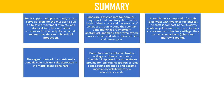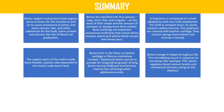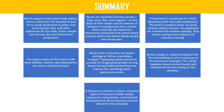Bones form in the fetus on hyaline cartilage or fibrous membrane models. Epiphyseal plates persist to provide for longitudinal growth of long bones during childhood and become inactive by calcifying when adolescence ends. Bone remodeling occurs in response to hormones — for example, parathyroid hormone regulates blood calcium levels — and mechanical stresses acting on the skeleton. Common fracture types include simple, compound, compression, comminuted, and greenstick; bone fractures must be reduced to heal properly.